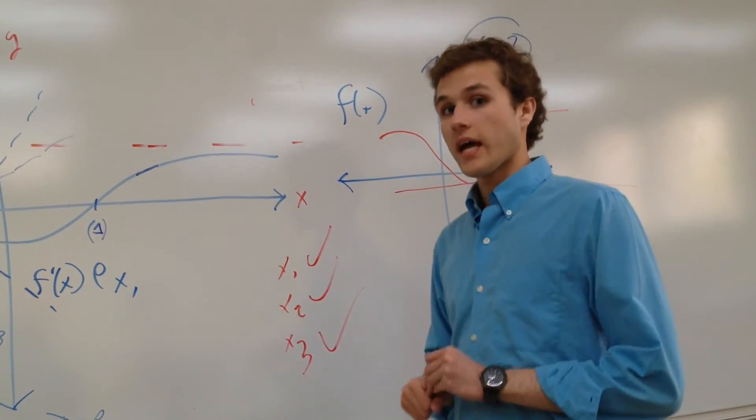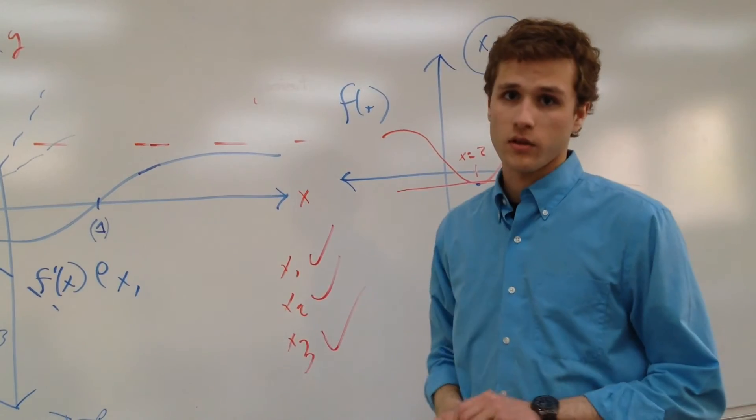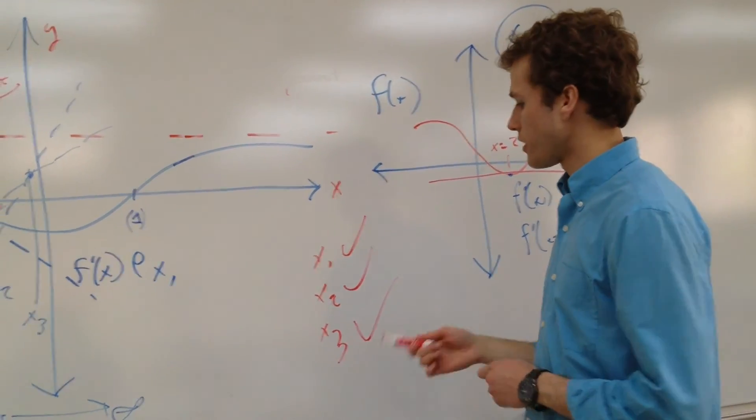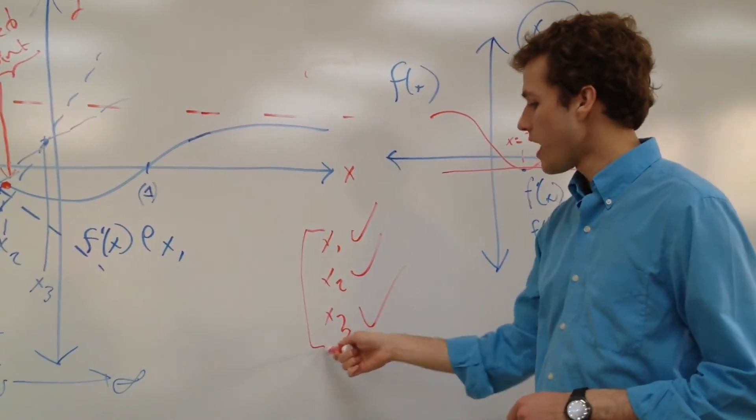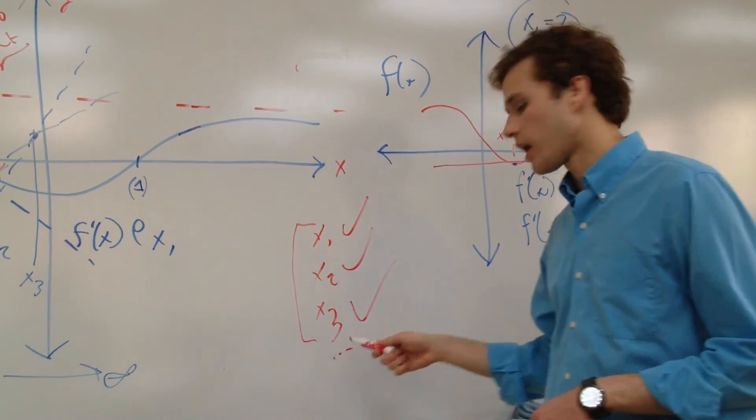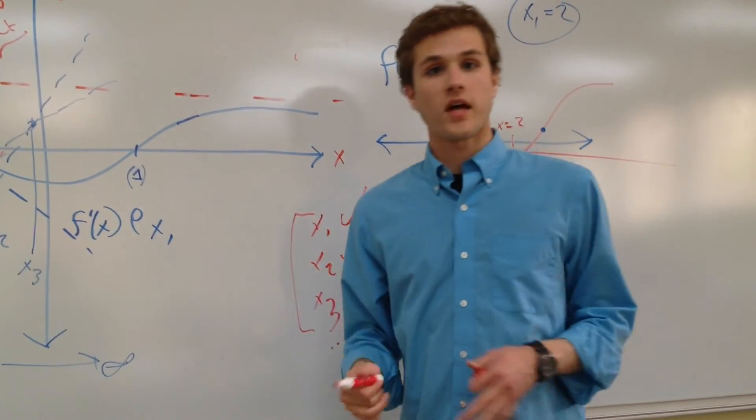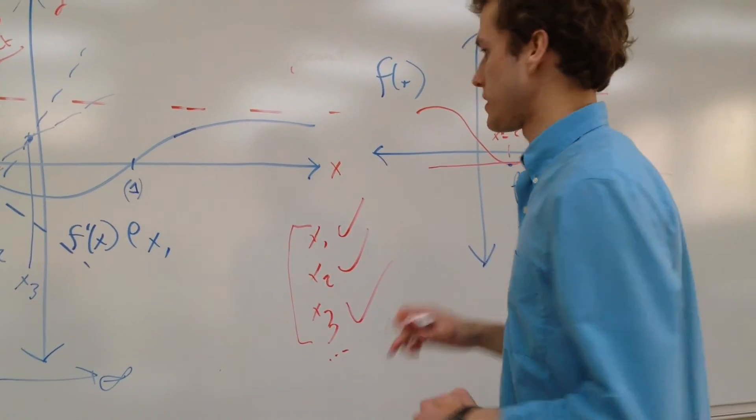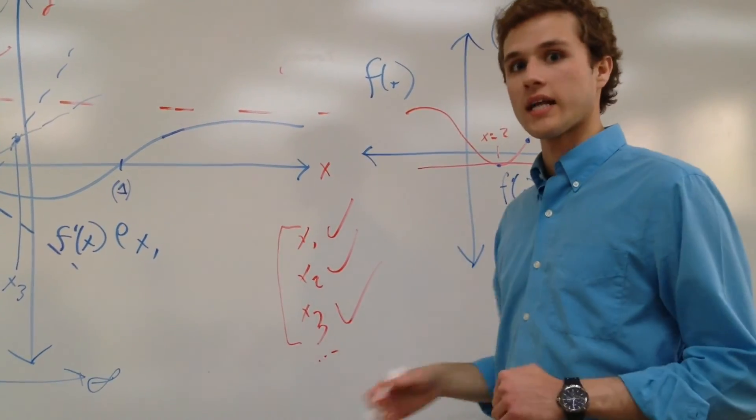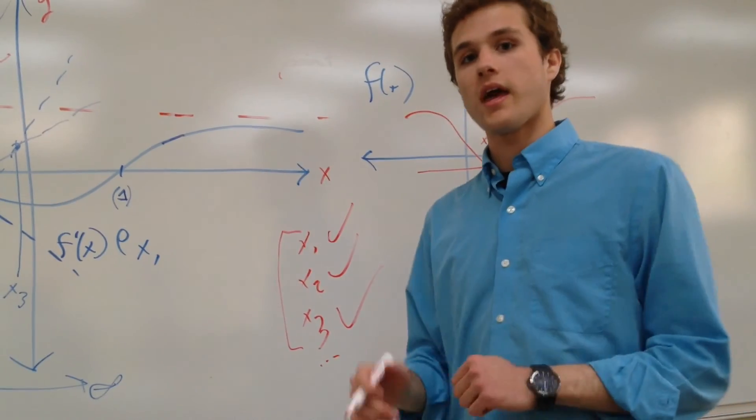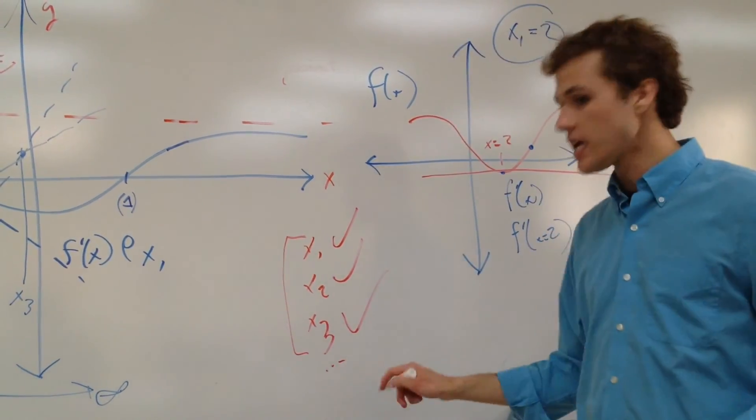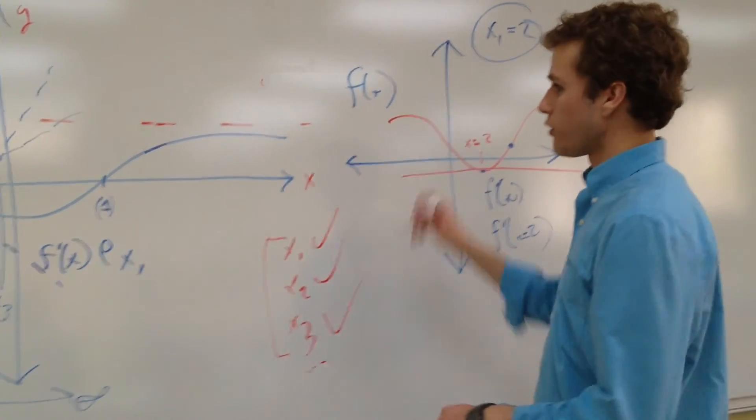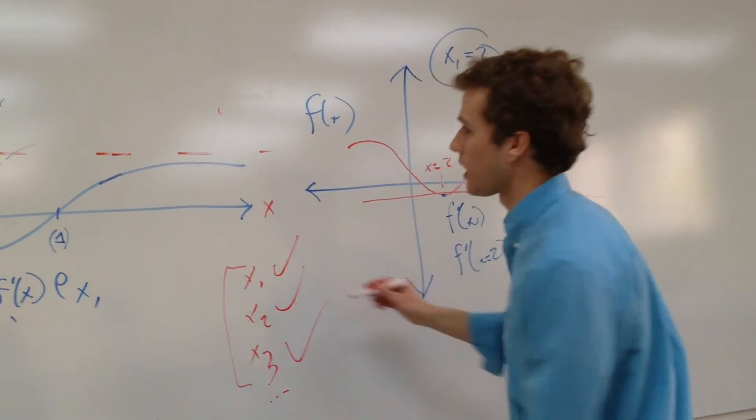Another potential area of failure is, you cannot assume that just because x1, x2, x3, dot dot dot, were acceptable values and did not give you horizontal tangent lines, that they will not eventually fail. You can't, you know, x17 might fail, because your function could look something like this.